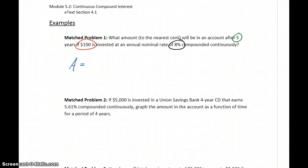So our final amount is going to be equal to our principal investment times E to the interest rate, 0.08 times the amount of time, times 5.